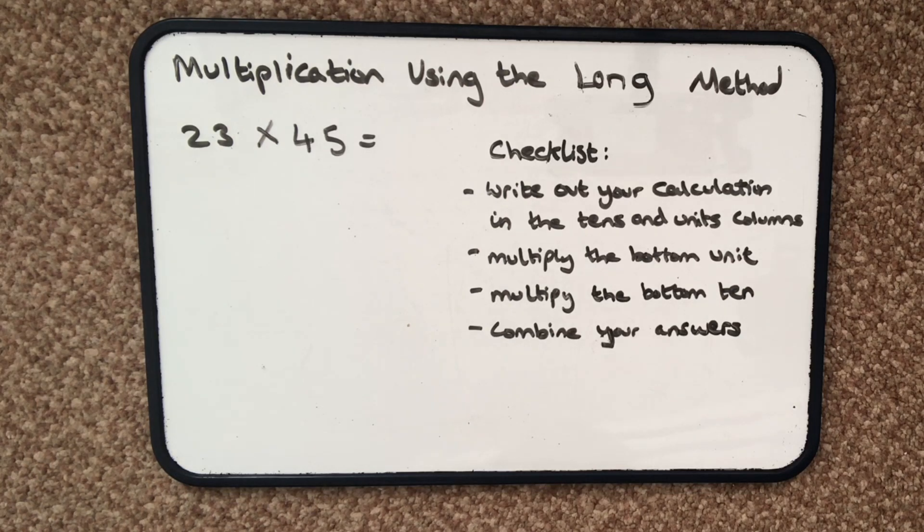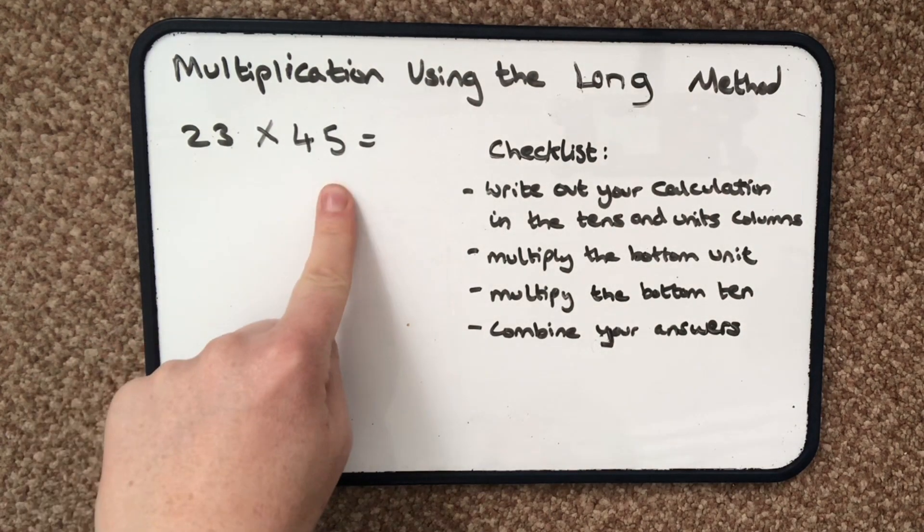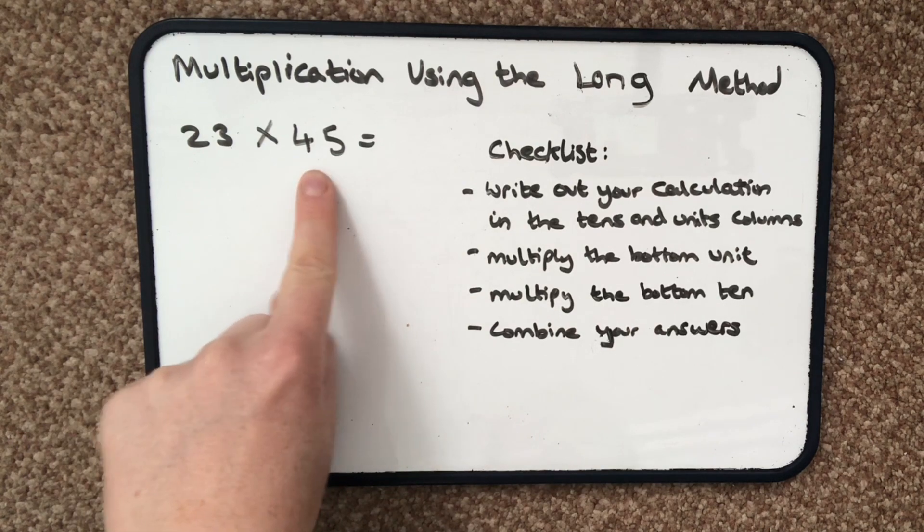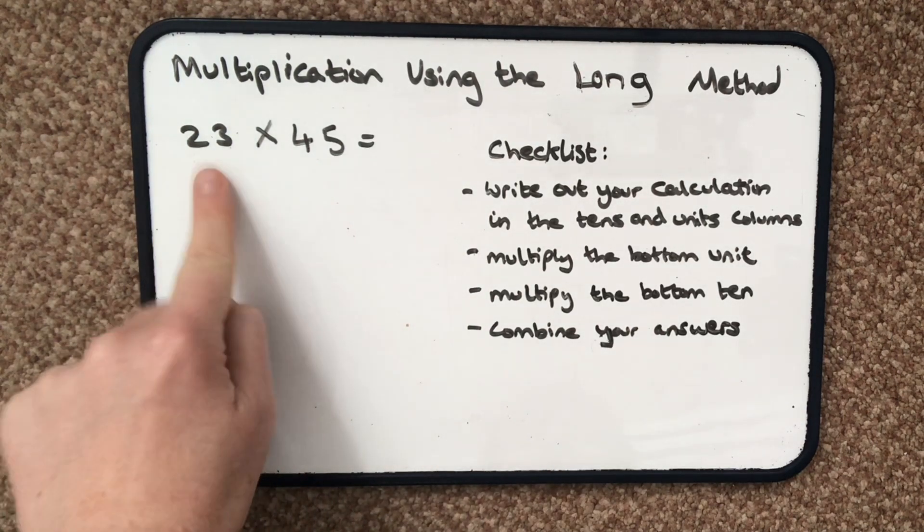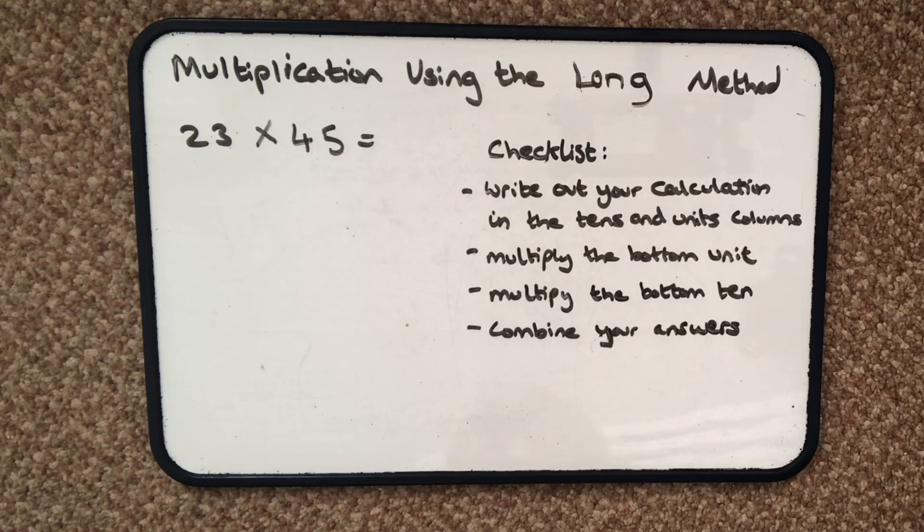So we're going to look at multiplication using the long method. This is the method you use after the compact method if you now have more than one digit in the second number. So I've got a two digit by a two digit number. It's going to be like the compact method but there's just going to be an extra stage. It's sort of like the compact method and the expanded method kind of joined together.